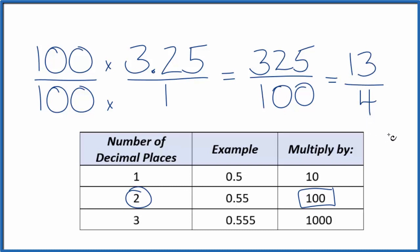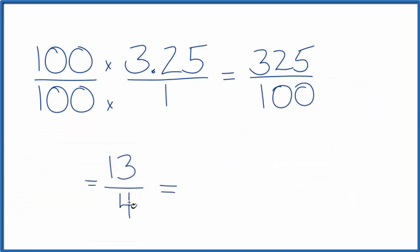Let's convert it to a mixed fraction. So 4 goes into 13, 3 times 4 is 12. So 3 with 1 left over. We end up with 3 and 1 fourth.